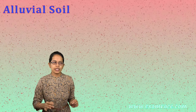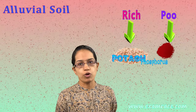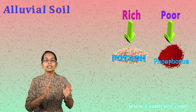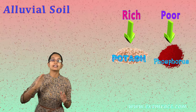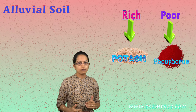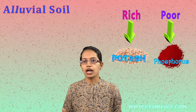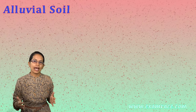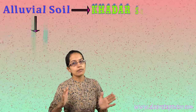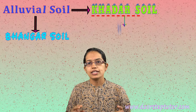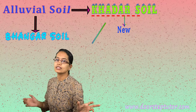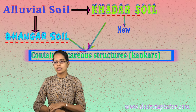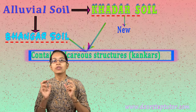The most important characteristic of alluvial soil is that it is rich in potash and poor in phosphorus — a commonly asked question in multiple choice exams. Alluvial soil can be categorized into two forms: khadar soil and bhangar soil. Khadar soil is a newly formed soil. Both khadar and bhangar have calcareous nodules or calcium concretions seen within the soil.